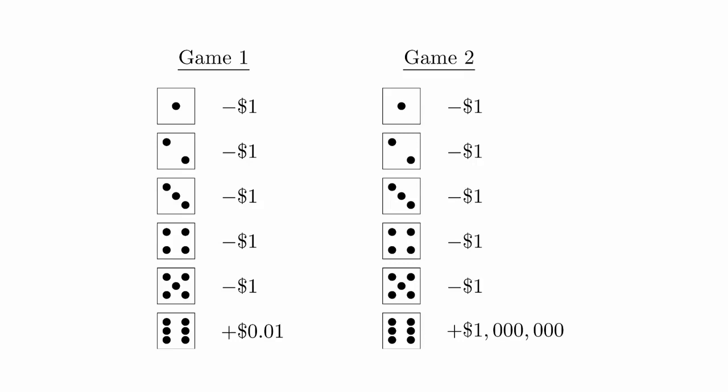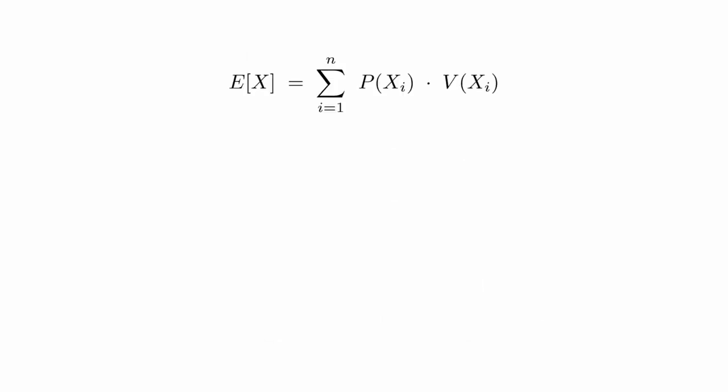When gambling, different probabilistic events are associated with a payout. Here are two hypothetical gambling games. Game 1: You roll a standard six-sided die. You lose one dollar if you roll one through five, and win one cent if you roll a six. Game 2: You roll a standard six-sided die. You lose one dollar if you roll one through five, and win one million dollars if you roll a six. The chances of winning and losing are the same for each game, but you should be able to see that the first game is bad for you, and the second game is good for you. You are intuitively picking up on the idea of the expected value of a game. There's more going on with this game than just the probability of winning and losing. Some wins are bigger than others.